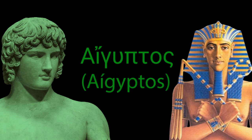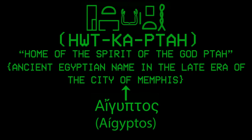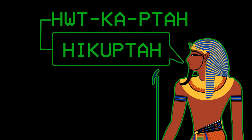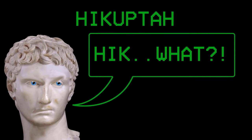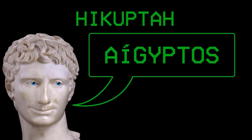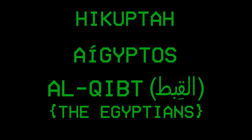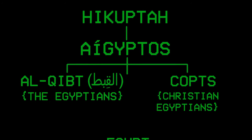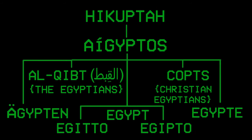If we move to Western civilizations, we will find that the ancient Greeks called Egypt Aguptos, a name derived from the original ancient Egyptian name in the late era of the city of Memphis, which is Hotka-Peta, meaning 'the temple or home of the spirit of the god Peta.' With the passage of time, the ancient Egyptians began to pronounce the name Hekapta. With the difficulty of the Greeks pronouncing some of the letters, they changed it to Aguptos, from which the Arabic word Al-Ket was derived — the name the Arabs used to refer to the Egyptian people in ancient times — and from which the English word Copt was also derived, particularly referencing Egyptian Christians in modern times. It is also the origin of the English name Egypt, along with many other similar names in other languages.